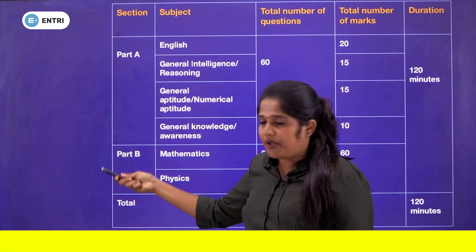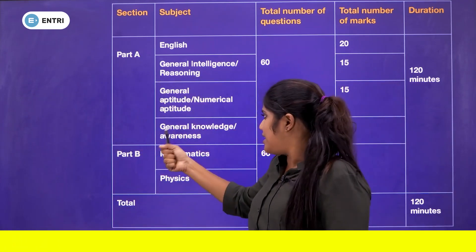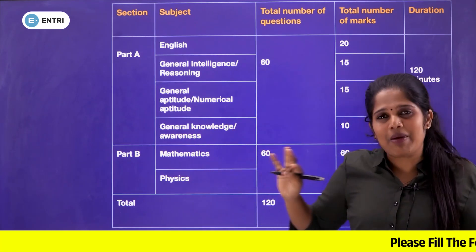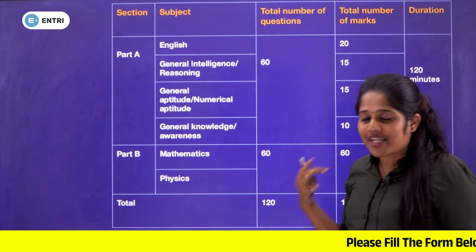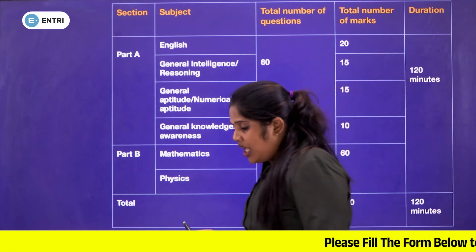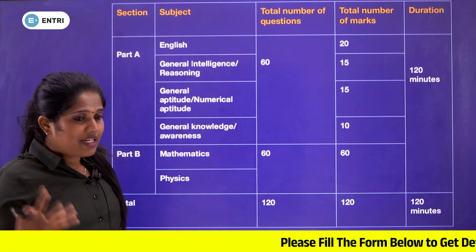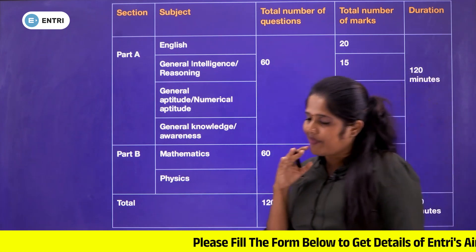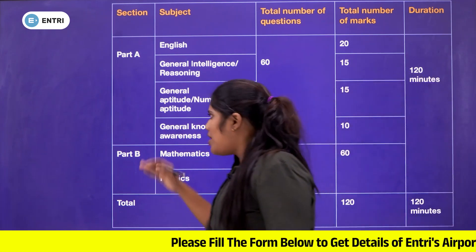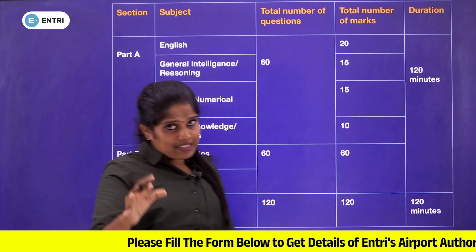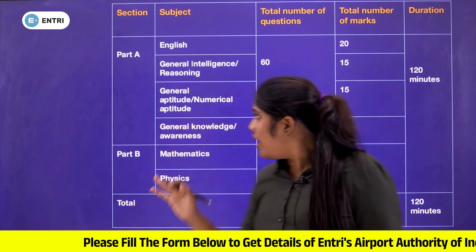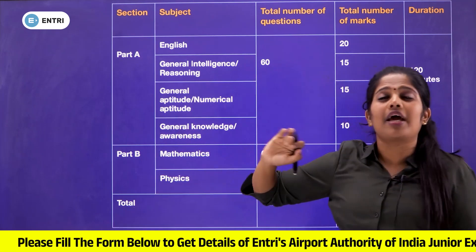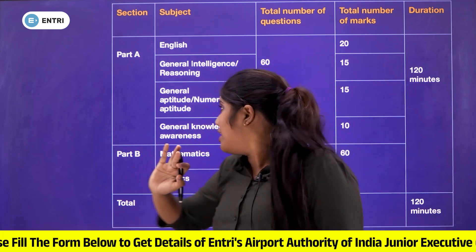Part A and Part B. Part B is comparatively simple — mathematics and physics. If you have a B.Sc. with mathematics or physics, those questions will be covered. Part A is comparatively simple too. Part B covers English — if you know English, you can answer it in time.